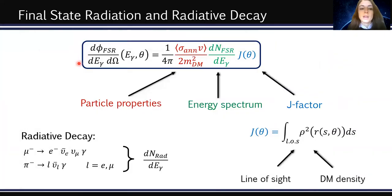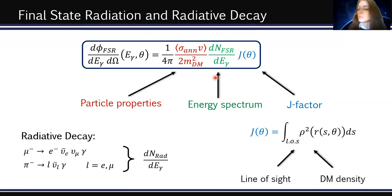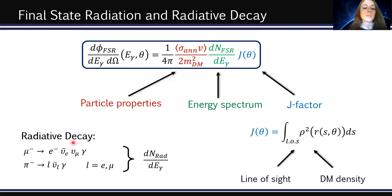The differential flux of final state radiation depends on the particle properties of the dark matter particles — mass and annihilation cross-section — as well as on the energy spectrum into photons and on the J-factor. The J-factor is the integral along the line of sight of the squared dark matter density distribution, squared because we focus on annihilating dark matter. For the muon and pion channels we also have radiative decay emission; the differential flux for radiative decay has the same form as final state radiation, one just replaces the energy spectrum with the appropriate one.